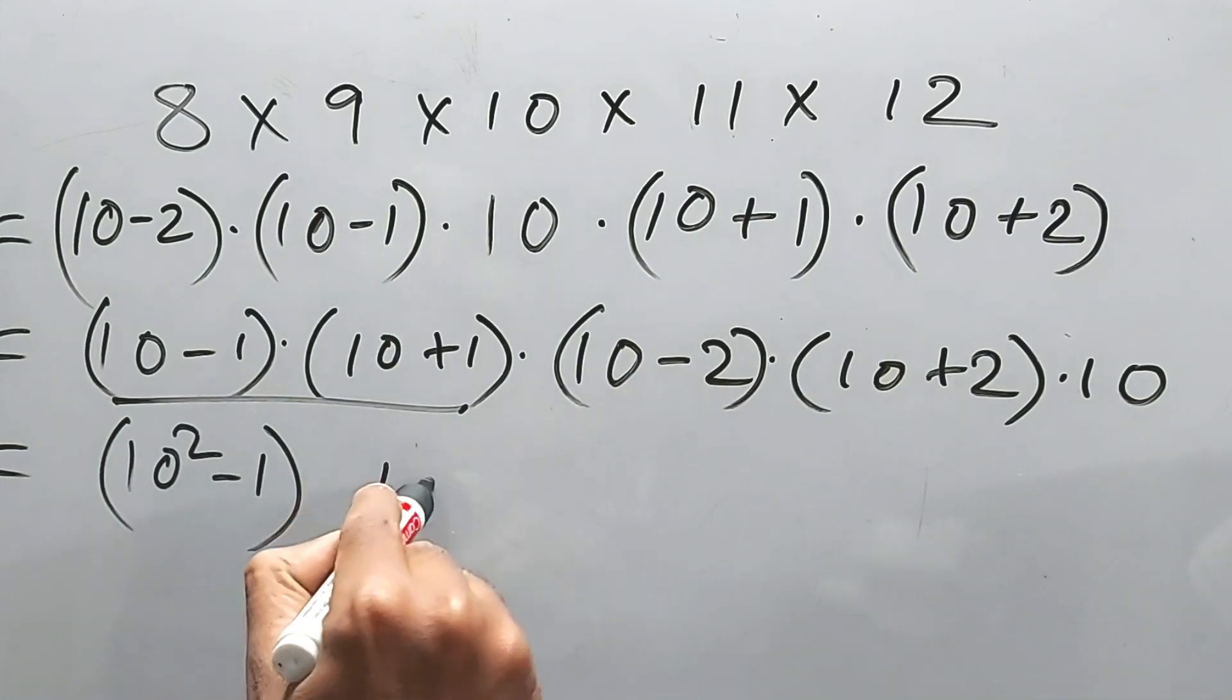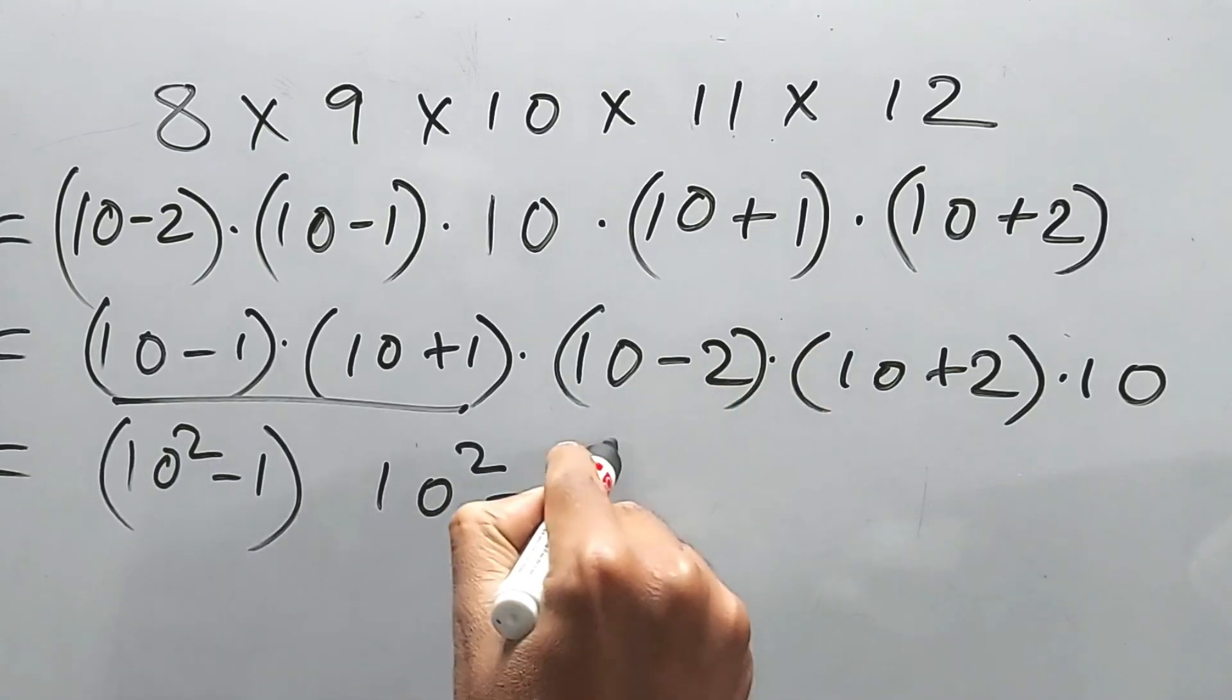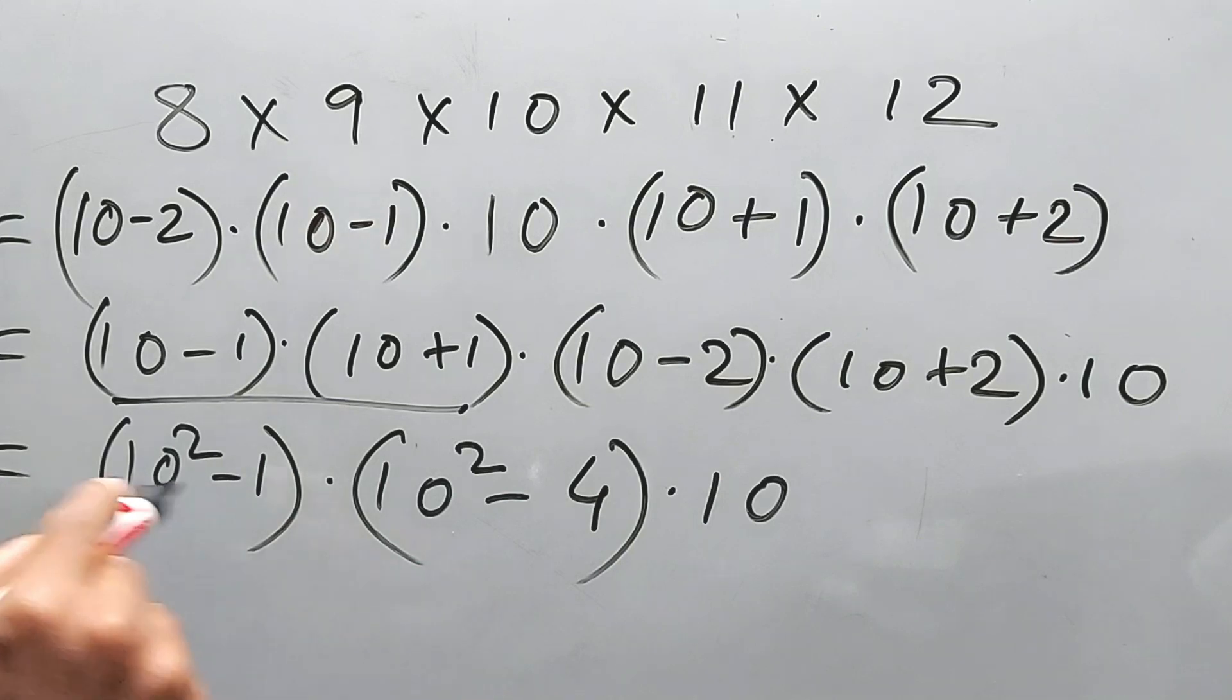Same with this two, right? 10² minus 2², that is 4. Can we write it like this? Is it working fine? Now last but not least...